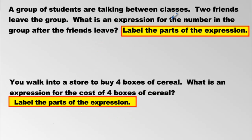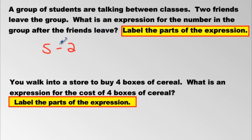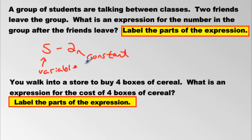A group of students are talking between classes. We don't know how many, so we call it S. Two of the friends leave the group. What is an expression for the number remaining after the friends leave? S minus two. S is the variable, and minus two is the constant because it doesn't change and it decreases the amount.